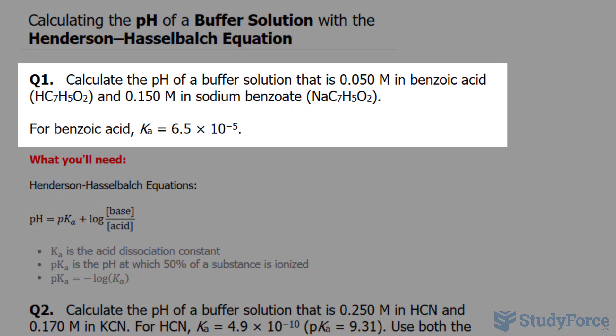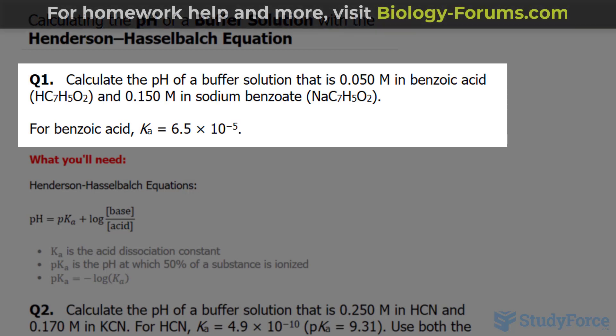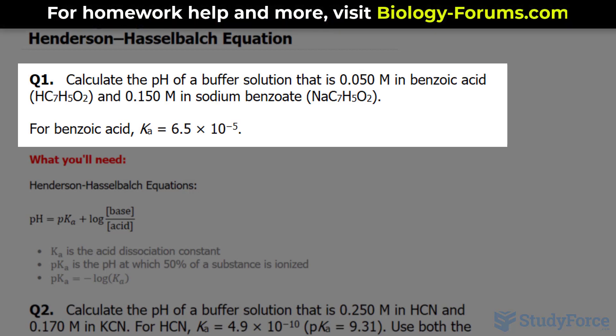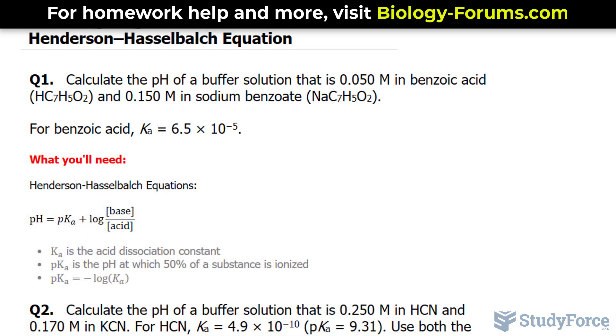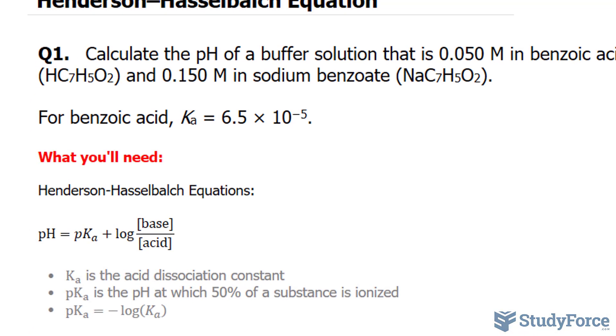Question one reads, calculate the pH of a buffer solution that is 0.050 molar in benzoic acid (HC7H5O2) and 0.150 molar in sodium benzoate (NaC7H5O2). We've also been told that the acid dissociation constant for benzoic acid, Ka, is 6.5 times 10 to the negative 5.